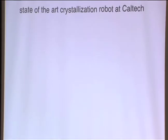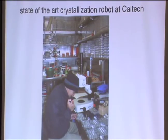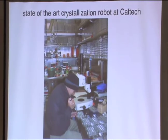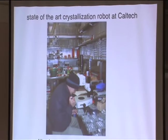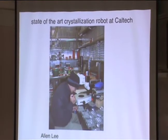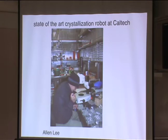We're an institute of technology, so we have a state-of-the-art crystallization robot. His name is Alan Lee. Alan doesn't actually work on nitrogenase — he mainly works on the membrane protein side — but you can see him pipetting here. All these trays stacked up are crystallization setups: 24-well trays where each well is one crystallization experiment. One of the occupational hazards of working in Southern California is that a lot of people don't have coats, so you have to get a lab coat to work in the cold room.